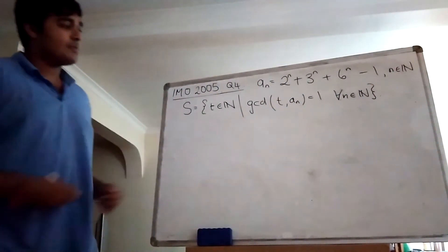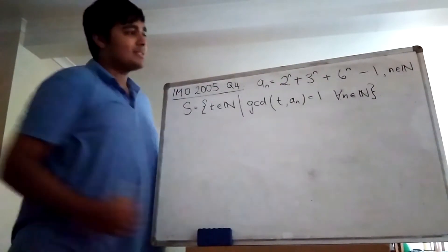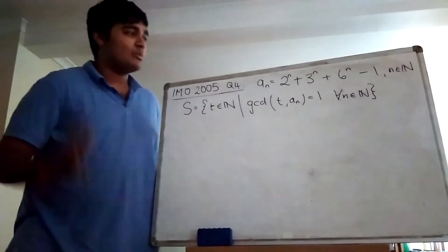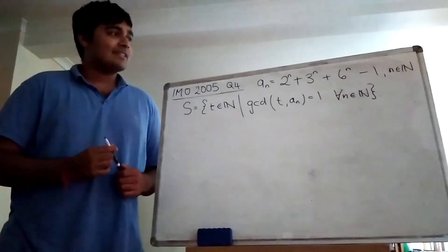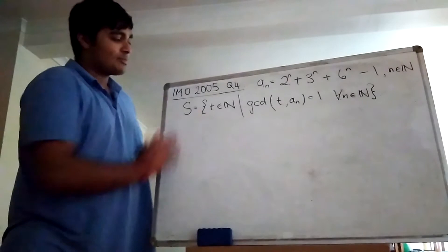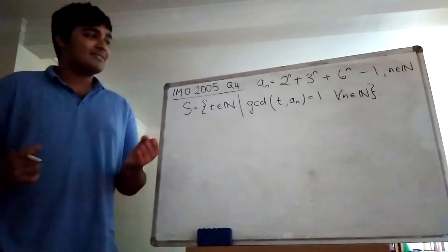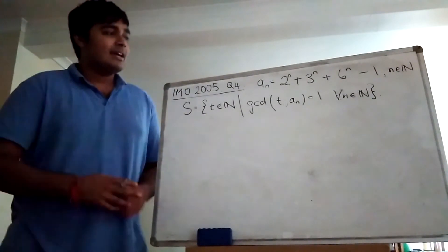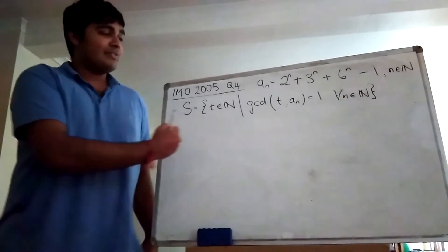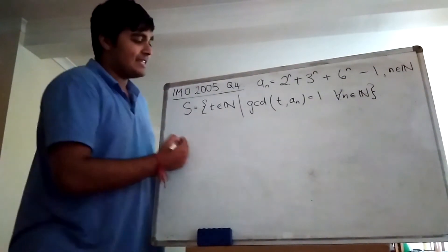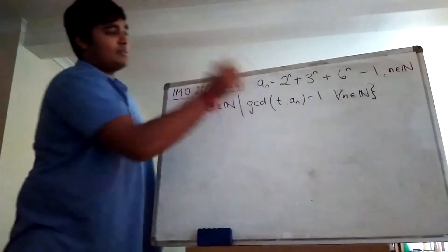We have Problem 4 from the 2005 IMO. We have this sequence of numbers aₙ defined as follows: aₙ equals 2 to the n, plus 3 to the n, plus 6 to the n, minus 1, and that's for all natural numbers n. Then we have this set S, which is the set of natural numbers T for which the greatest common divisor of T and aₙ is 1, for all natural numbers n. So S is a subset of the natural numbers which has the property that any number in this set is co-prime to absolutely every number in this sequence.